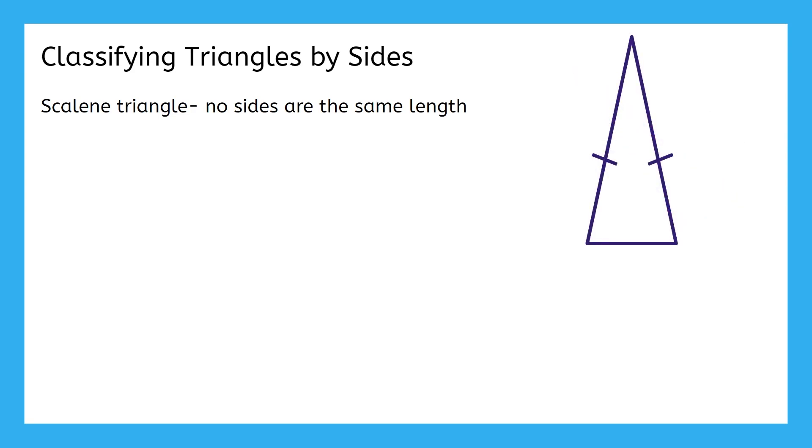This triangle has two congruent symbols showing that there are two sides that are the same length. This makes it an isosceles triangle.